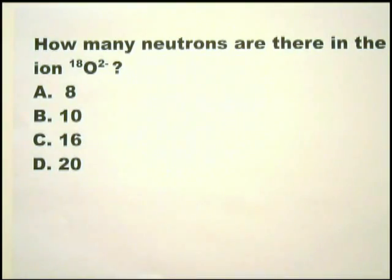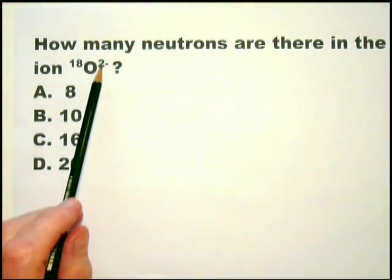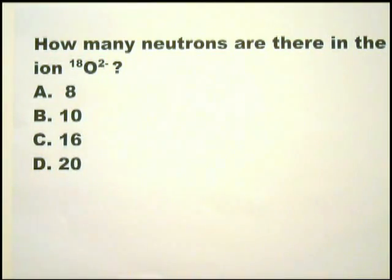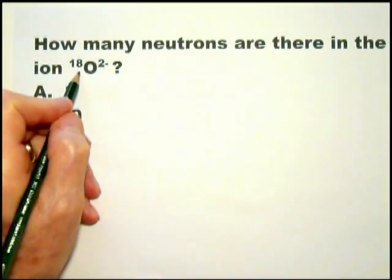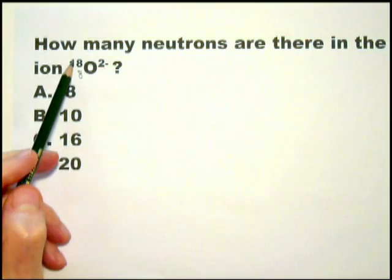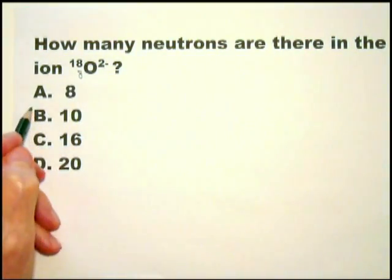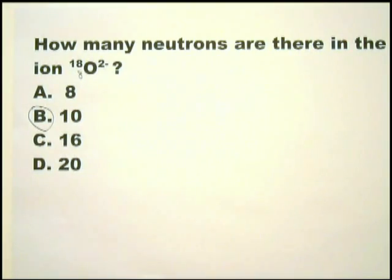These kind of questions are so easy that you should do them in 10 seconds. Ignore the electrons. It's irrelevant in terms of the number of neutrons. All you need to know is the atomic number of oxygen. Hopefully you remember that it's 8. And therefore the difference between 18 and 8 is 10, and that's the number of neutrons. And as I said earlier, practice with the periodic table just by reading it and trying to absorb the information so that this kind of question can be done in 10 seconds or less.